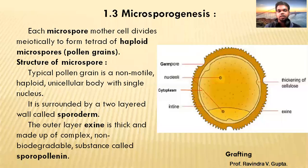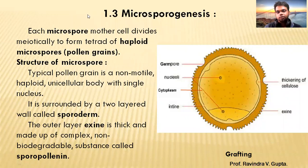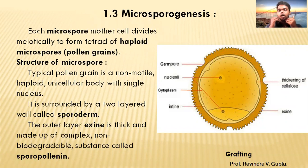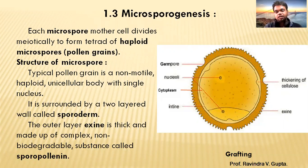Now we are starting with 1.3, Microsporogenesis, that is the male part. In the last lecture we completed the TS of Anther. Anther is nothing but the male part of a flower. In this topic, Microsporogenesis, we will see how the spores are formed, what the structure of that spore is, and how the spore structure is formed.